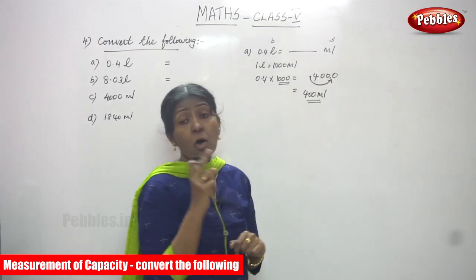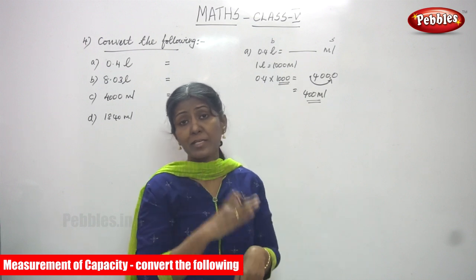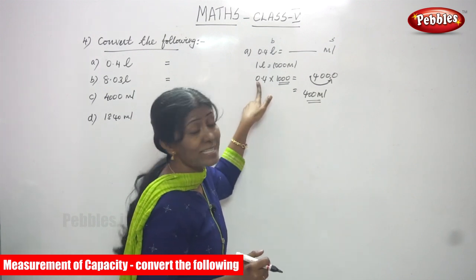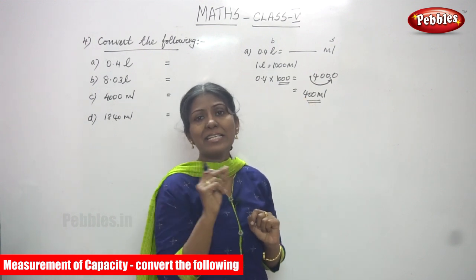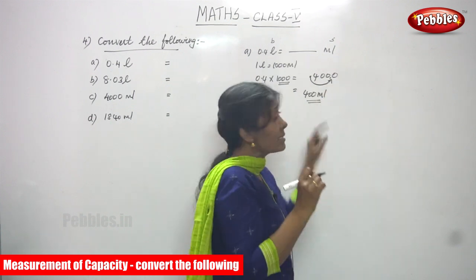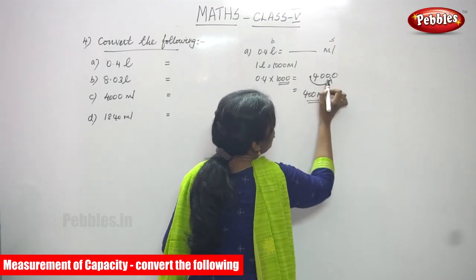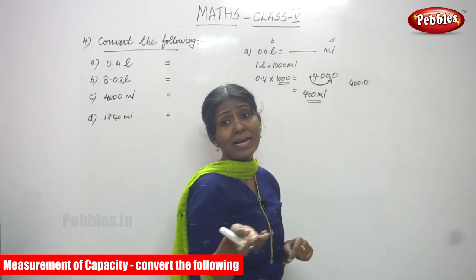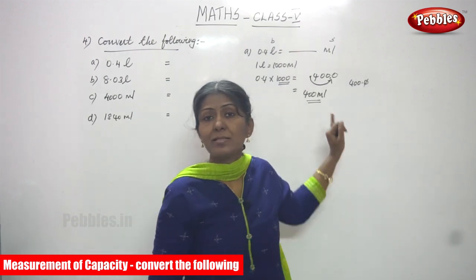To repeat: 0.4 into 1000, because one liter equals 1000 ml and bigger to smaller means multiply by 1000. Write 0.4, then three zeros. The decimal point moves three places to the right, giving 400.000. After the point you should not add zeros because they have no value, so the answer is 400 milliliters.